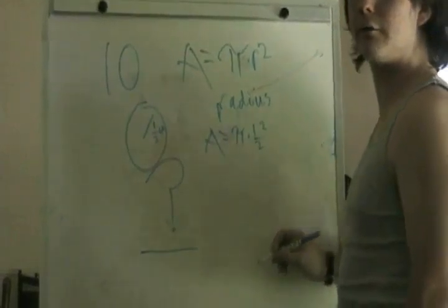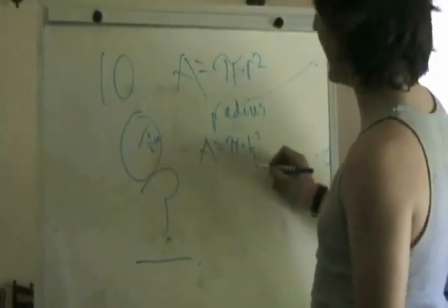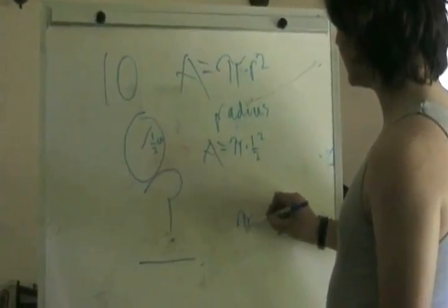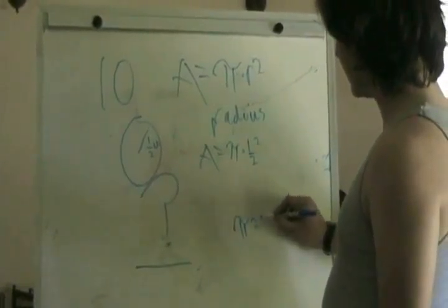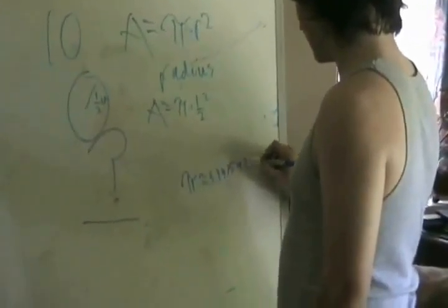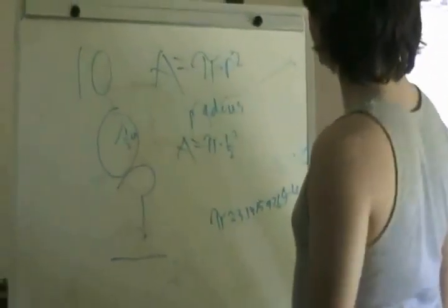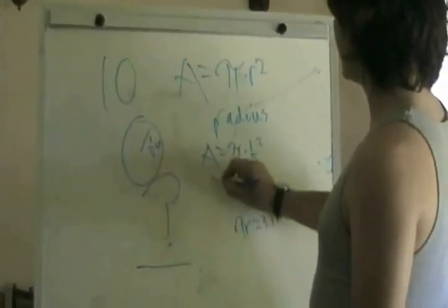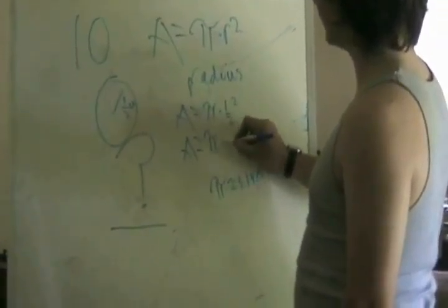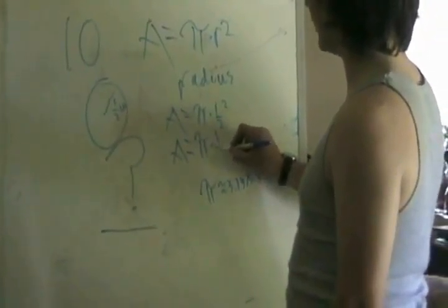So, we know from simple arithmetic that 1 1⁄2 squared equals 1 1⁄4, and that pi is equal to approximately 3.14159265, etc., etc. But that is not important. So, area is equal to pi times 1 1⁄4.